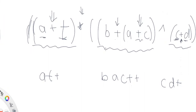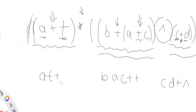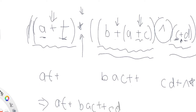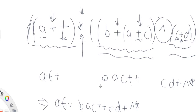Then we need to place the caret (power) sign because after evaluating both of those operations, the caret sign comes at the end. So we have `b a c + + c d + ^`. To top it all off, we add the final multiplication operand at the very end. So the end result is `a t + b a c + + c d + ^ *`.